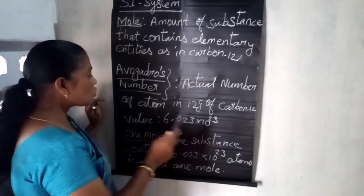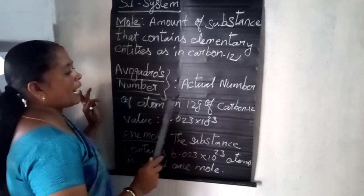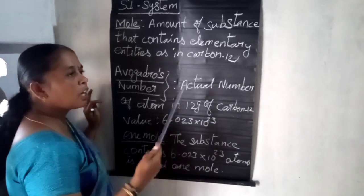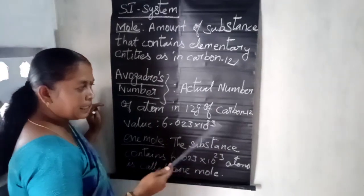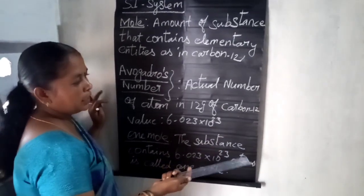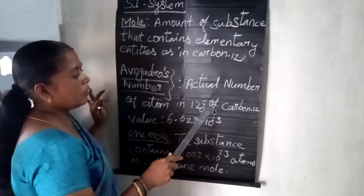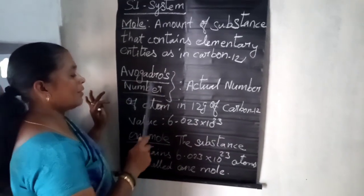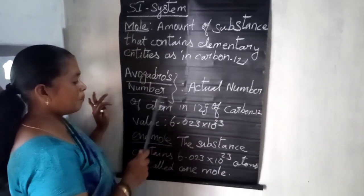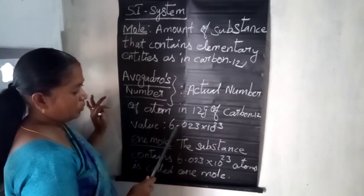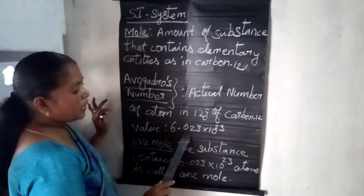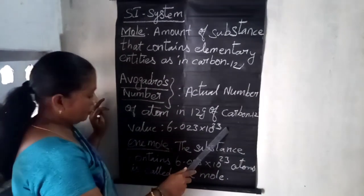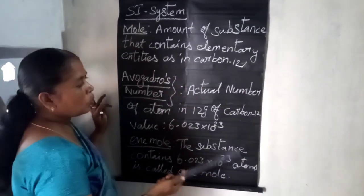Avogadro's number: the actual number of atoms in 12 grams of carbon-12 is 6.023 × 10²³. This is known as Avogadro's number, and its value is 6.023 × 10²³.